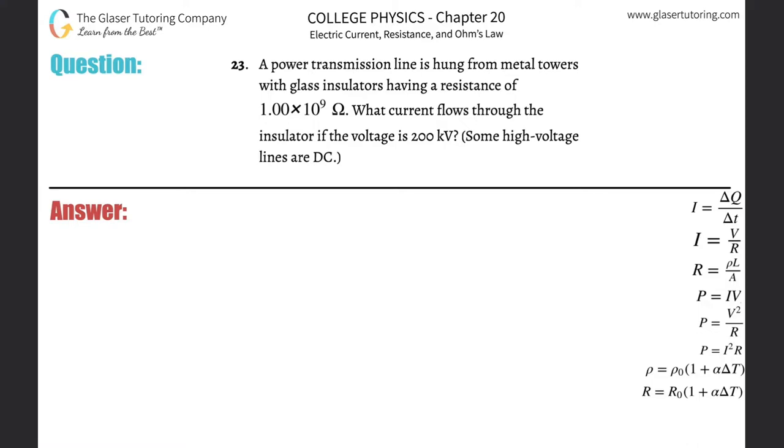Number 23. A power transmission line is hung from metal towers with glass insulators having a resistance of 1 times 10 to the 9 ohms. What current flows through the insulator if the voltage is 200 kilovolts?